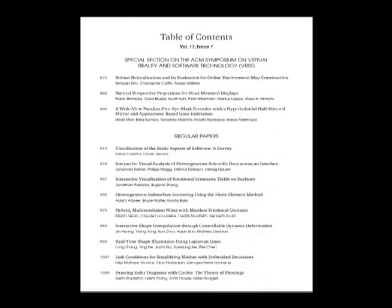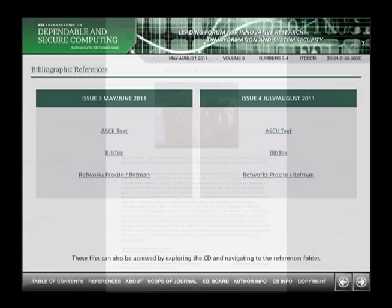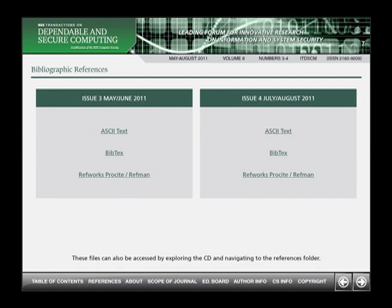Included with the abstract book is a disk containing the full contents of the issues for that quarter or trimester, including all papers, supplemental material, and other materials, including all references for the papers in ASCII text, BibTeX, and RefWorks ProCite RefMan formats.